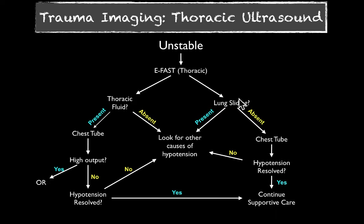Our second thoracic binary question is: is there lung sliding? The presence of lung sliding rules out pneumothorax. If present, look for other causes of hypotension. If absent in a trauma patient, you can't say with 100% certainty there's a pneumothorax, but it increases likelihood on your differential. Remember other causes of absent lung sliding include breath holding, prior pleurodesis, or a bleb in someone with COPD. In a young healthy patient or with high enough suspicion, place a chest tube — that could resolve the hypotension and you continue supportive care. If it doesn't, continue looking.